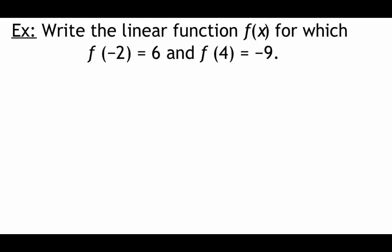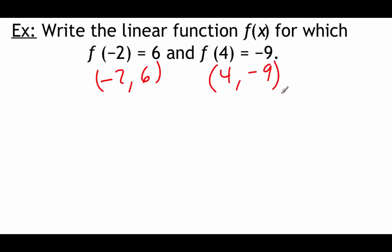Here's a quick example writing out a linear function based on some given information. We're given that f of negative 2 equals 6 and f of 4 equals 9. That information gives us two ordered pairs: negative 2, 6 and 4, negative 9. Since we have two points, we could use two-point form, or we can find the slope and then use point-slope form — and that's the way I'm going to do it.